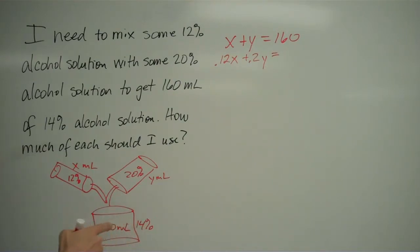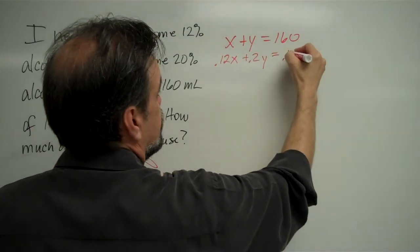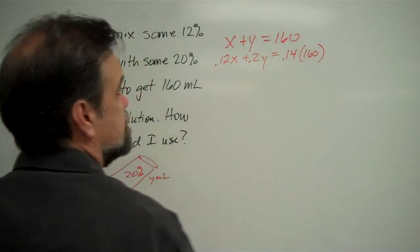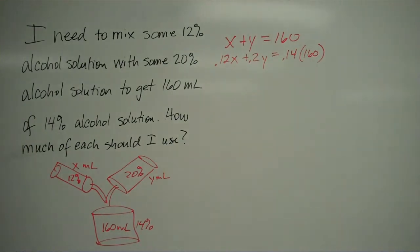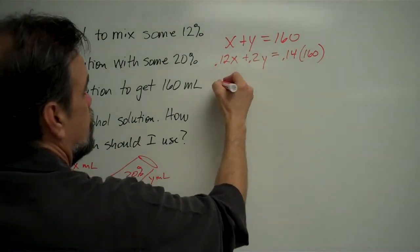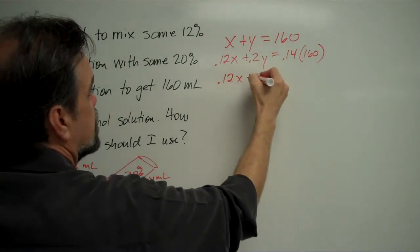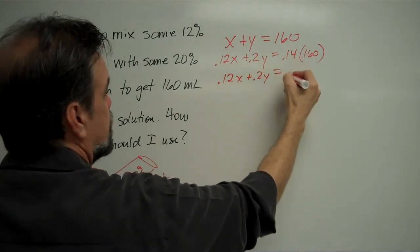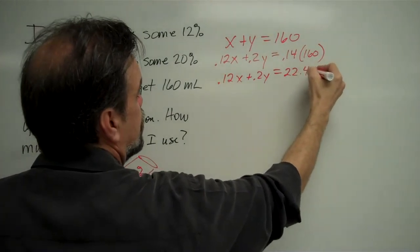which is 14% of 160. So that's 0.14 of 160. And we can rewrite this to be 0.12x plus 0.2y equals, I believe that's 22.4.